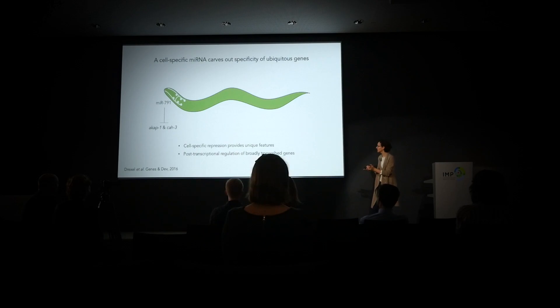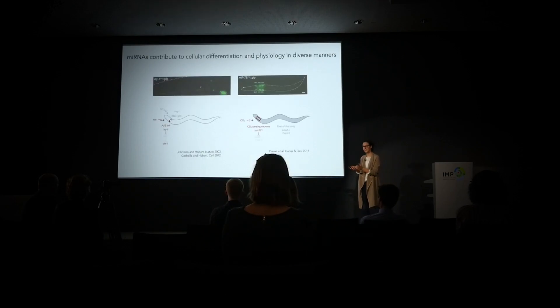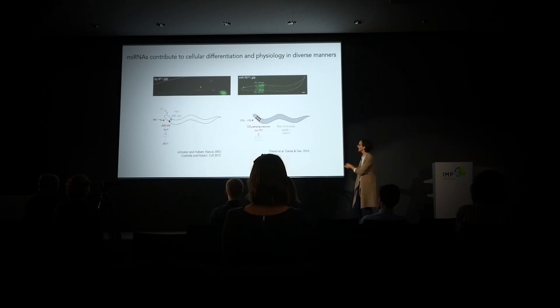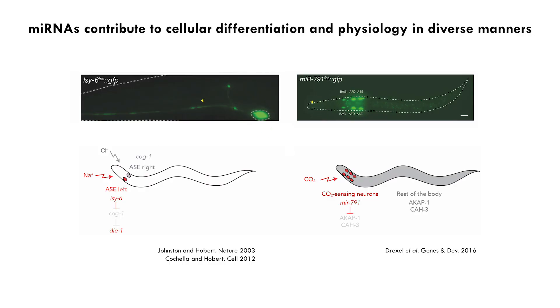The way miR-791 works is just one way microRNAs can achieve cell type diversification. The other case I want to briefly tell you about is Lasy-6, which is expressed in a single neuron out of the whole animal. This neuron where Lasy-6 is expressed is the left member of a bilaterally symmetric pair of sensory neurons in the head of the animal. The fact that Lasy-6 is expressed only on the left side allows this cell to adopt a different identity than its counterpart on the right side, enabling the two sensory neurons to respond to different cues from the environment — essential for the animal's ability to chemotax and find food sources or escape from unwanted situations.